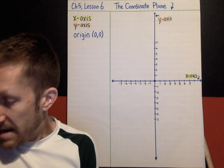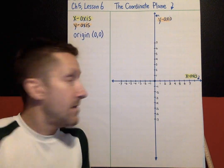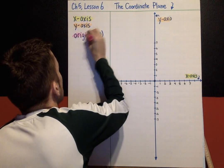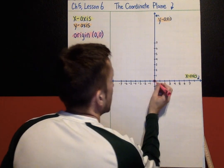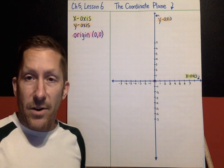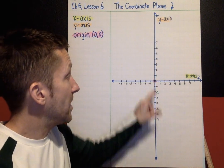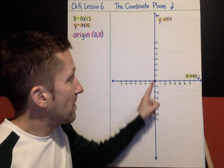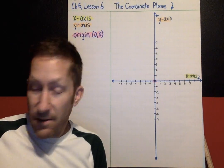Let's make that a different color — the origin is pink. This is the origin right there. Whenever you're plotting ordered pairs on a coordinate plane, you always start at the origin. We will always start here when we're putting points on the graph, on the coordinate plane.